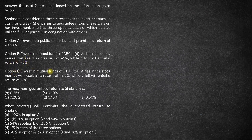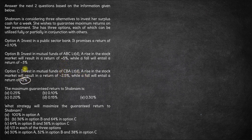Similarly, in Option C — again a mutual fund, CBA Limited — if the stock prices rise, you will get a return of minus 2.5%, and if the stock prices fall, you will get a return of plus 2%.